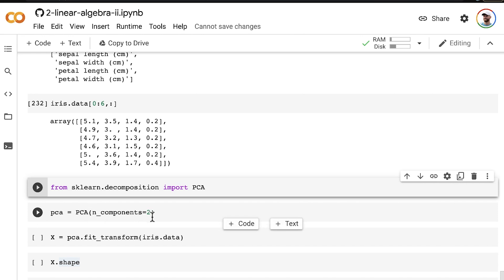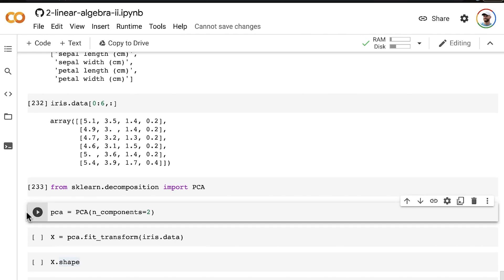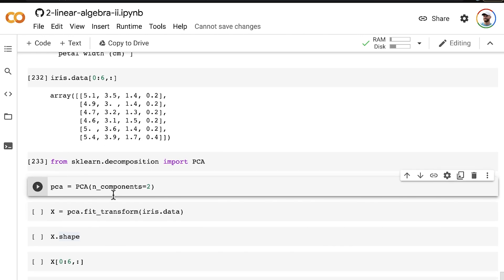And the reason why we're asking for two principal components is that we would like to be able to plot this as an XY plot. So we're going to compress four features worth of information, four columns worth of information, down to the two principal components